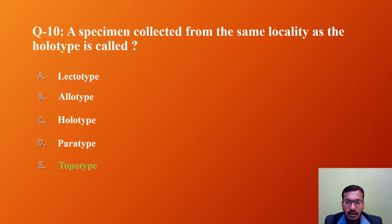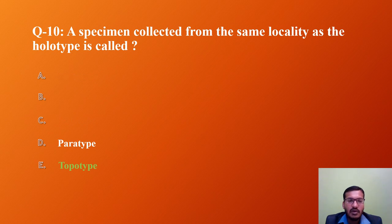Question 10: A specimen collected from the same locality as the holotype is called? A) Lectotype, B) Allotype, C) Holotype, D) Paratype, E) Topotype. Lectotype is designated from syntypes; allotype is the specimen of opposite sex to the holotype; holotype is the single specimen on which the description of the species is based; paratypes are specimens other than allotype and holotype; and the specimen collected from the same locality as the holotype is called topotype. The correct answer is E — topotype.